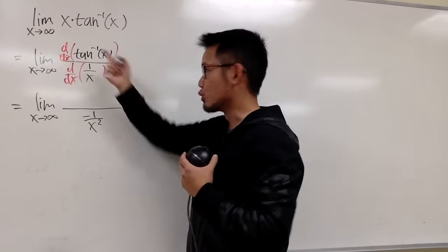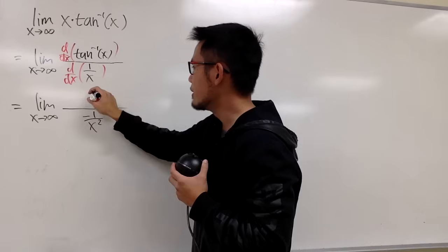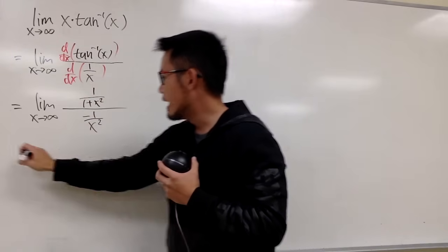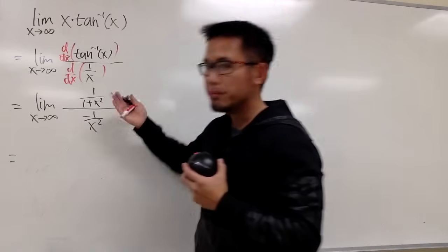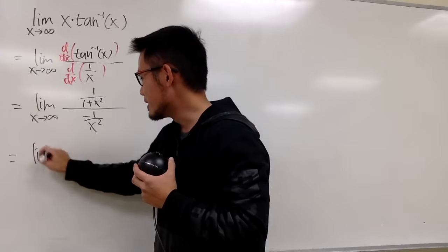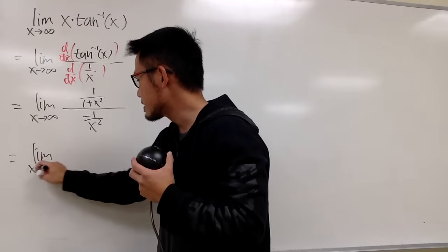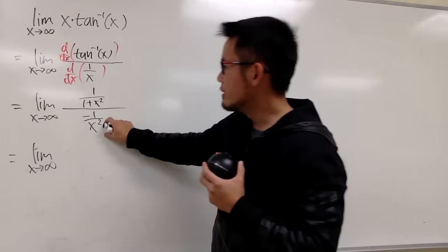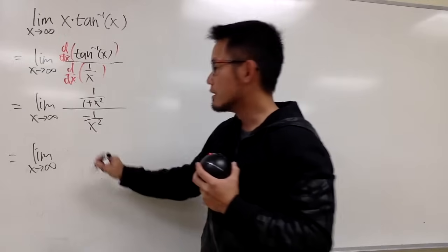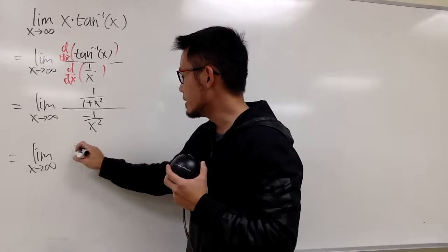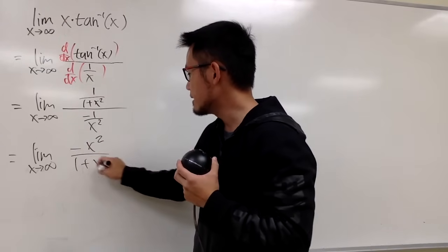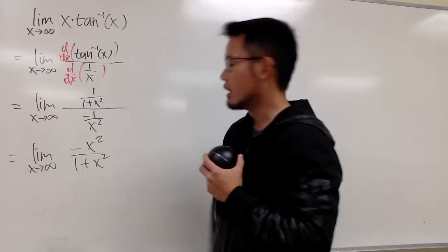On the top, the derivative of inverse tangent is 1 over 1 plus x squared. And we can flip-flip, right? This is just going to be the limit as x goes to infinity. Bring this up along with the negative sign.